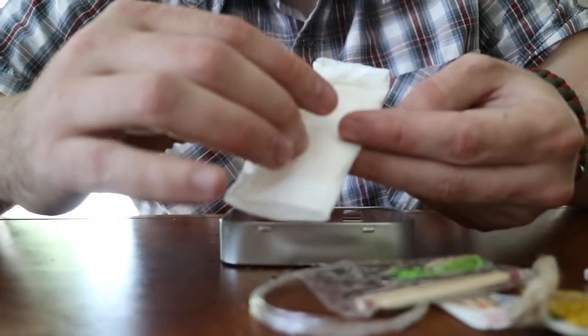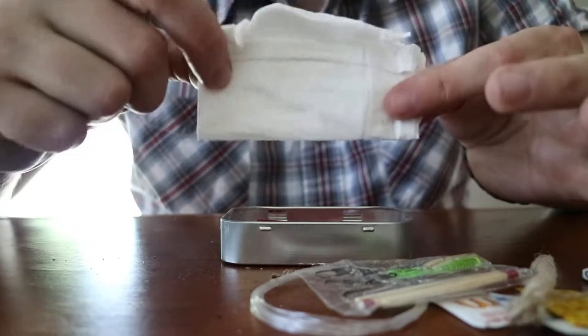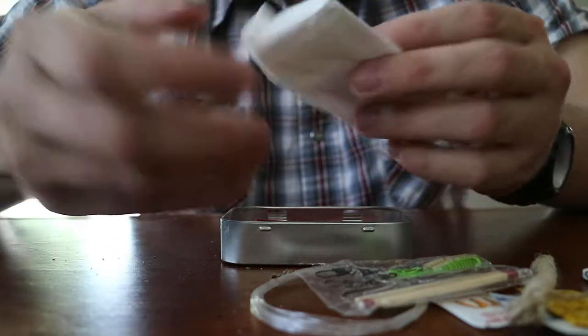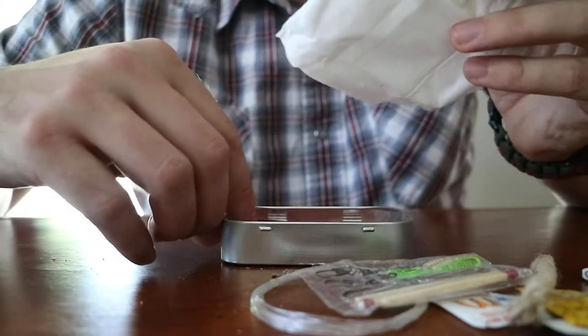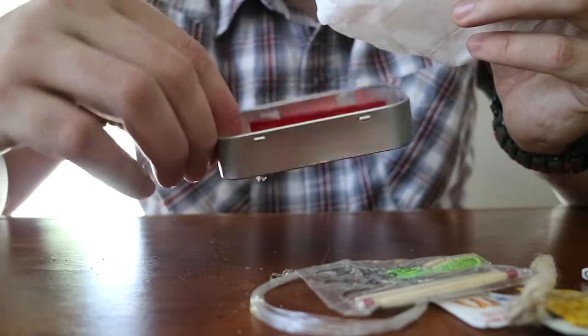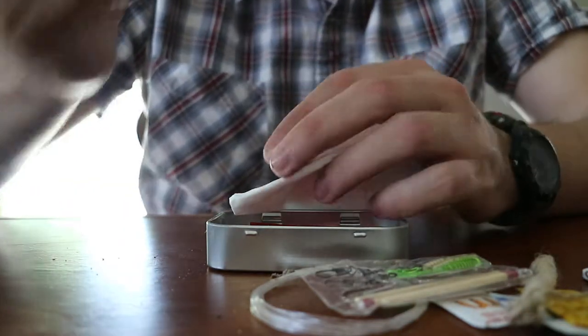Inside here, something I think most survival kits should have more of. This is just standard facial tissue, Kleenex if you will. You can take this Kleenex and use it as tinder to start a fire, or you can actually place it inside this metal tin once you already have a fire and it will become a very good fire starter. It will be turned into basically charcoal.